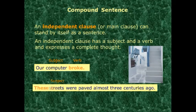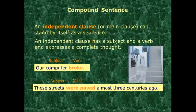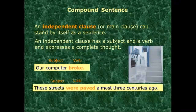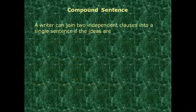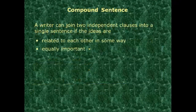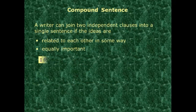Next example: 'These streets were paved almost three centuries ago.' Notice the subject, the verb, and the complete thought — three main elements that tell us this is an independent clause. To identify an independent clause, ask: does it have a subject and verb, and does it express a complete thought?